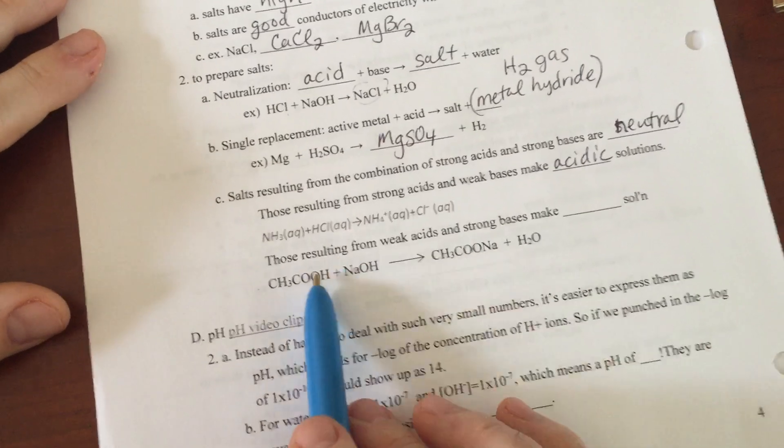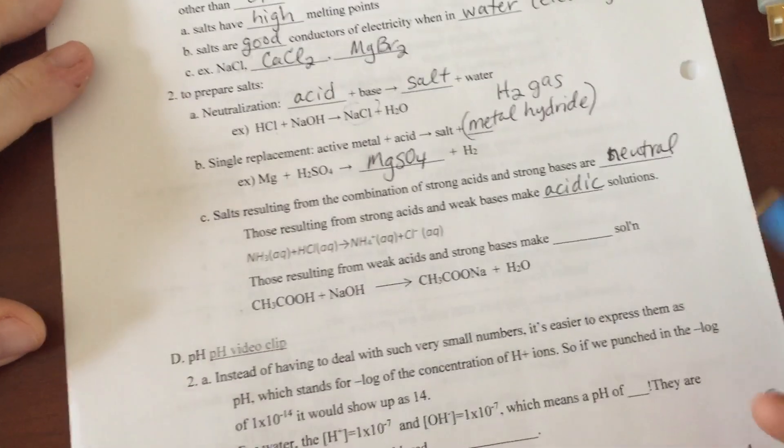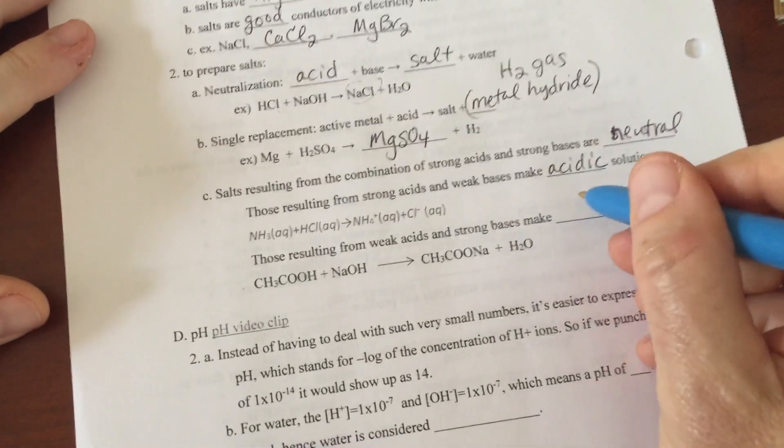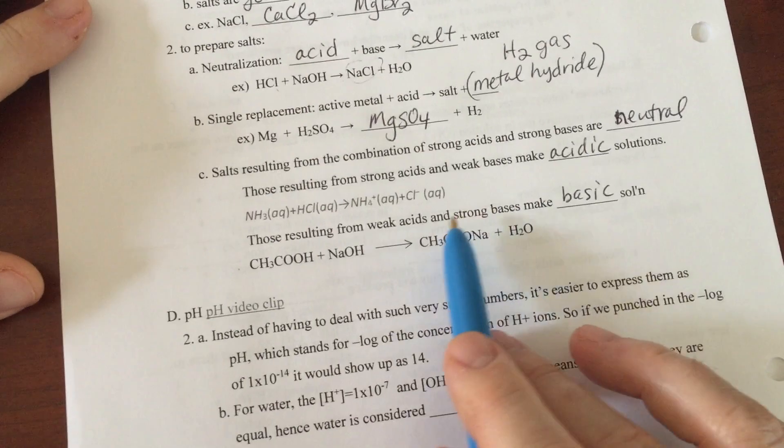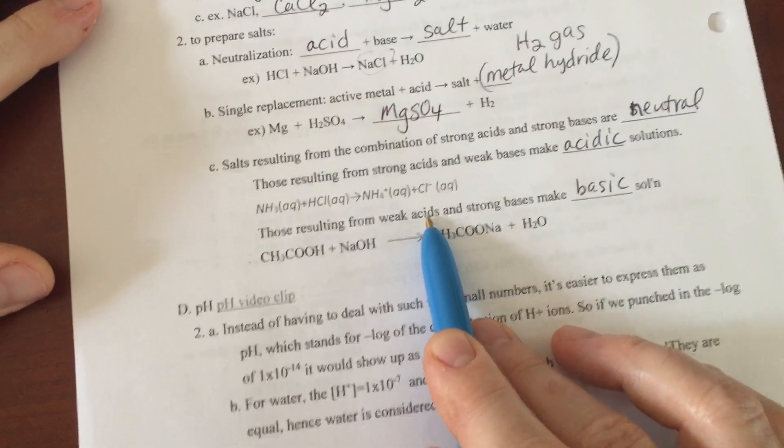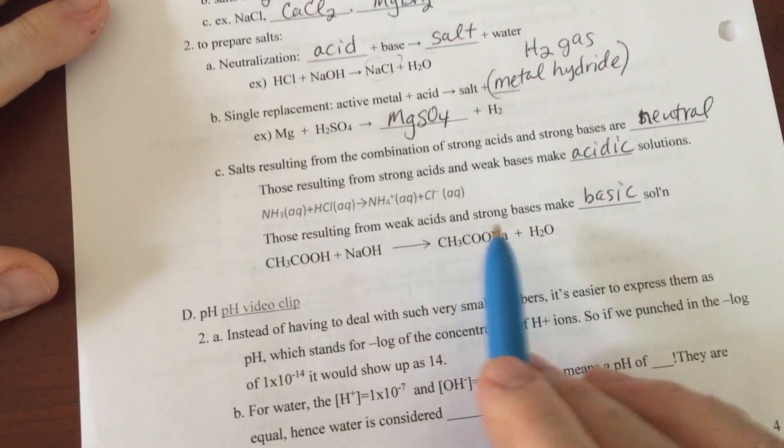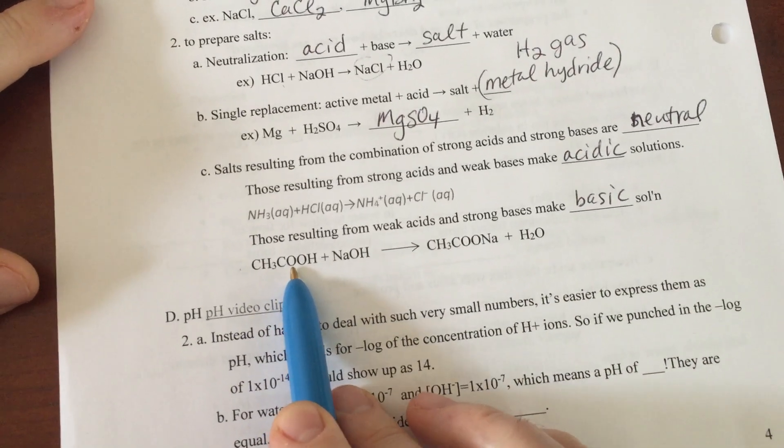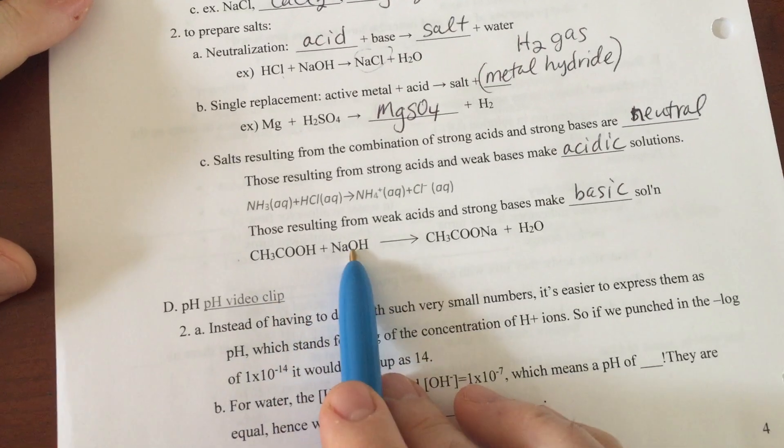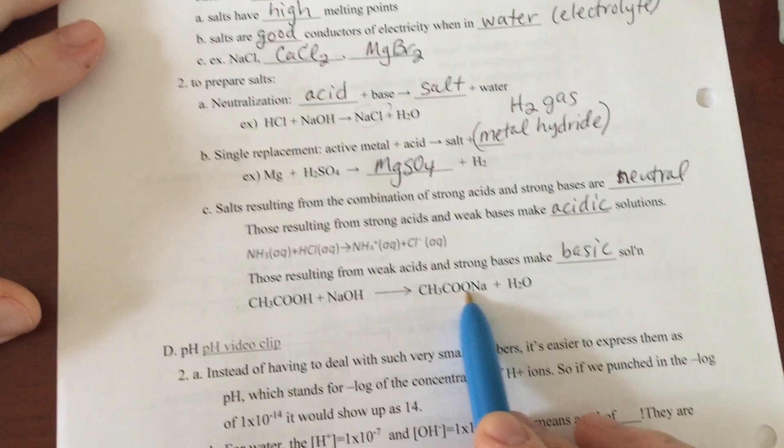And those resulting from weak acids and strong bases make basic solutions for the same reason. The base is going to out-strengthen the weak acid. Strong base, weak acid, you end up with a basic solution. Example here is something called ethanoic acid and then a strong base of sodium hydroxide, and then you get sodium ethanoate and then water.